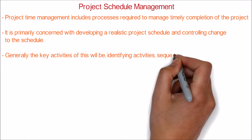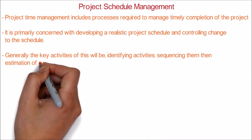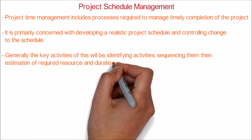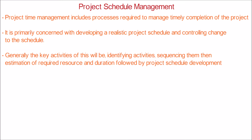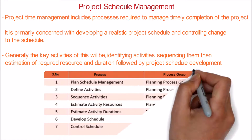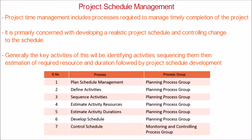Generally the key activities of this will be: identifying activities, sequencing them, then estimation of required resource and duration, followed by project schedule development. There are totally seven processes in this knowledge area as shown.